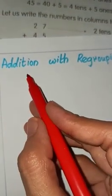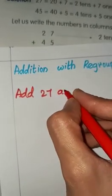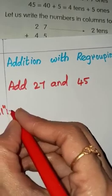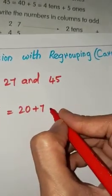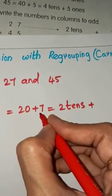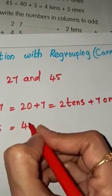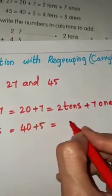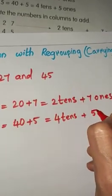You see here — addition with regrouping, carrying over. We have to add 27 and 45. 27 is equals to 20 plus 7, that equals to 2 tens plus 7 ones. And 45 is equals to 40 plus 5, and that equals to 4 tens plus 5 ones.